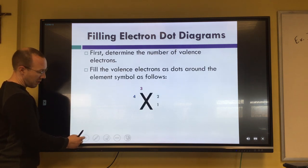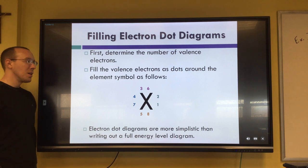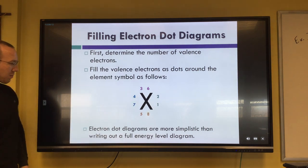So this is how we're putting our valence electrons around our element symbol. We're going to start out two on the right and then we move around in a counterclockwise direction.